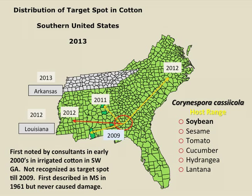The causal fungus of cotton target spot, Corynespora cassiicola, has a wide host range that includes soybean, sesame, and a number of vegetables and ornamentals. Target spot is an increasingly important foliar disease in soybean in the Mid-Atlantic states and does occur in Alabama. It's likely that the strain of causal fungus on cotton will also infect soybean.